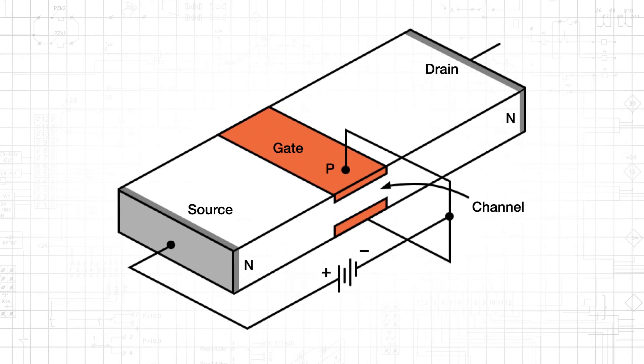A field effect transistor consists of two doped semiconductor regions that are separated by a channel, and a voltage is applied to the device in such a way as to alter the current carrying properties of the channel. The terminals separated by the channel are called the source and the drain, and the gate is the terminal to which the controlling voltage is applied.